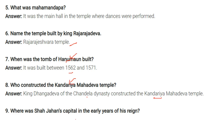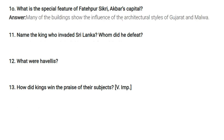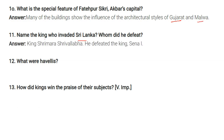Question: Where was Shah Jahan's capital in the early years of his reign? It was Agra initially. Question: What is the special feature of Fatehpur Sikri, Akbar's capital? Many of the buildings show the influence of the architectural styles of Gujarat and Malwa. Question: Name the king who invaded Sri Lanka — whom did he defeat? King Srimara Srivallabha defeated King Sena I. Question: What were Havelis? They were large mansions of wealthy merchants.